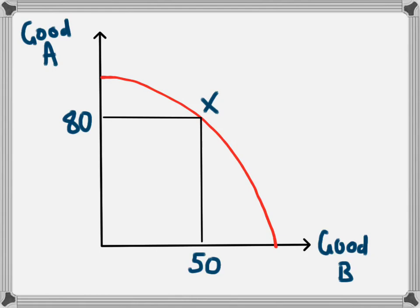If the economy decided that it had a greater preference for good B and wanted to consume more of good B, the economy could move along its production possibility frontier to a new point, point Y. At point Y, the economy can now have 60 of good B, which they had a preference for, but there is less of good A being produced. Now we are only producing 40 of good A.